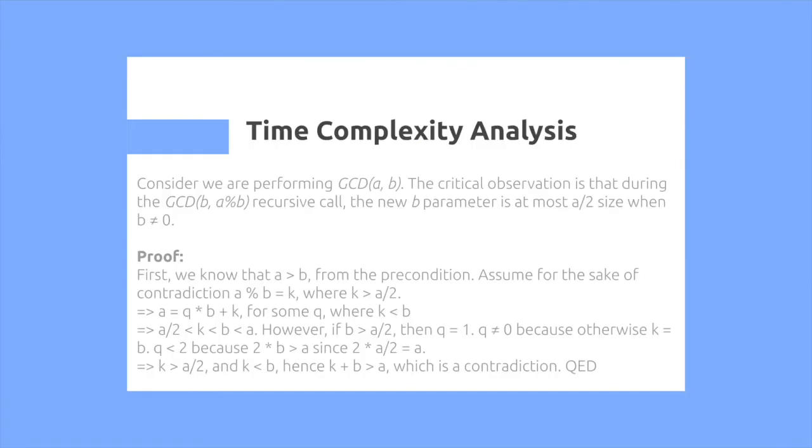The complexity analysis of this shows us that with the observation that when we do GCD of B comma A mod B recursive call, the new B parameter is at most A divided by 2 size, when B is not equal to 0. The proof is below if you're interested and want to pause the video.